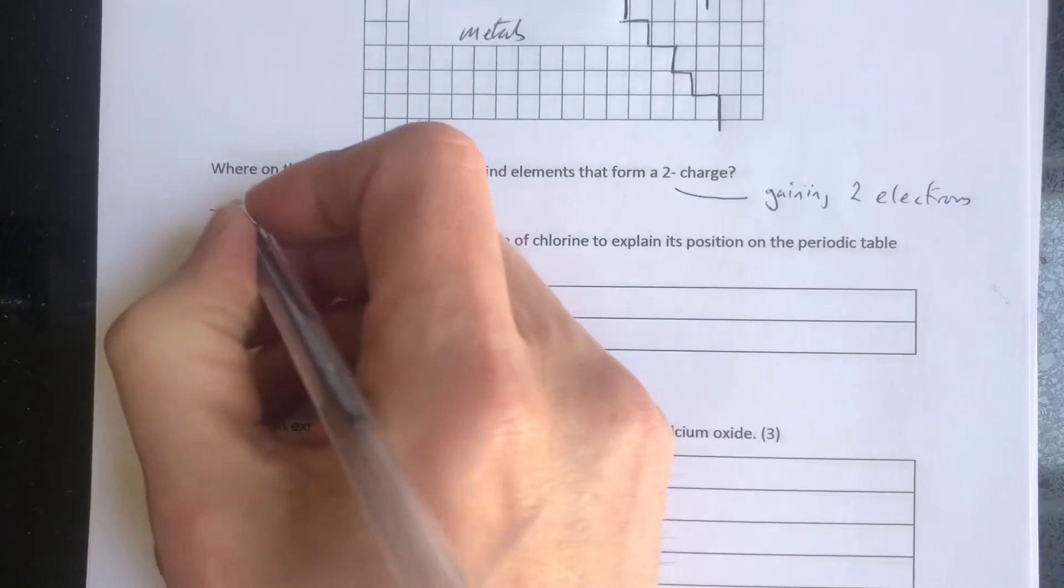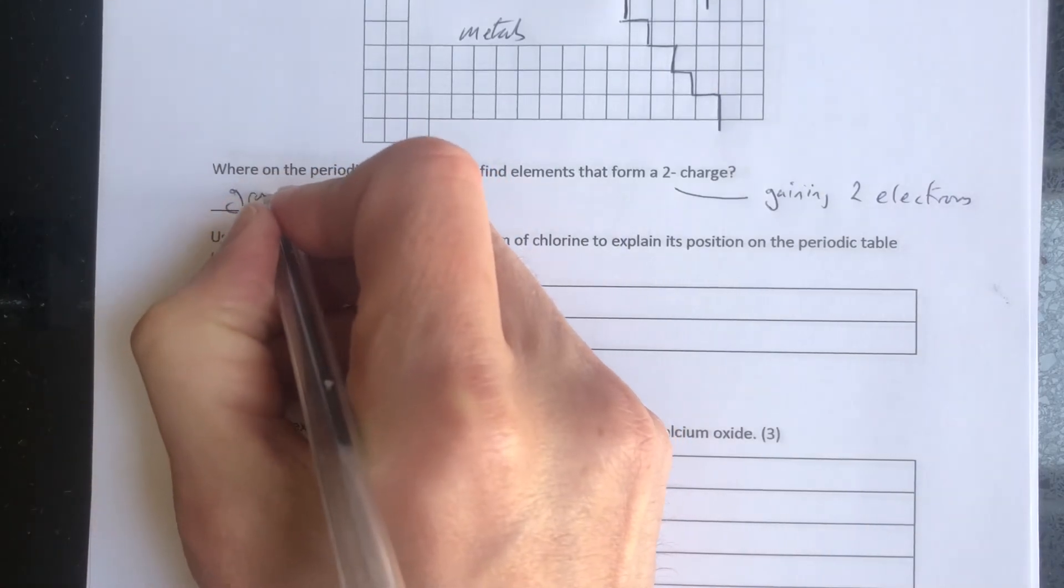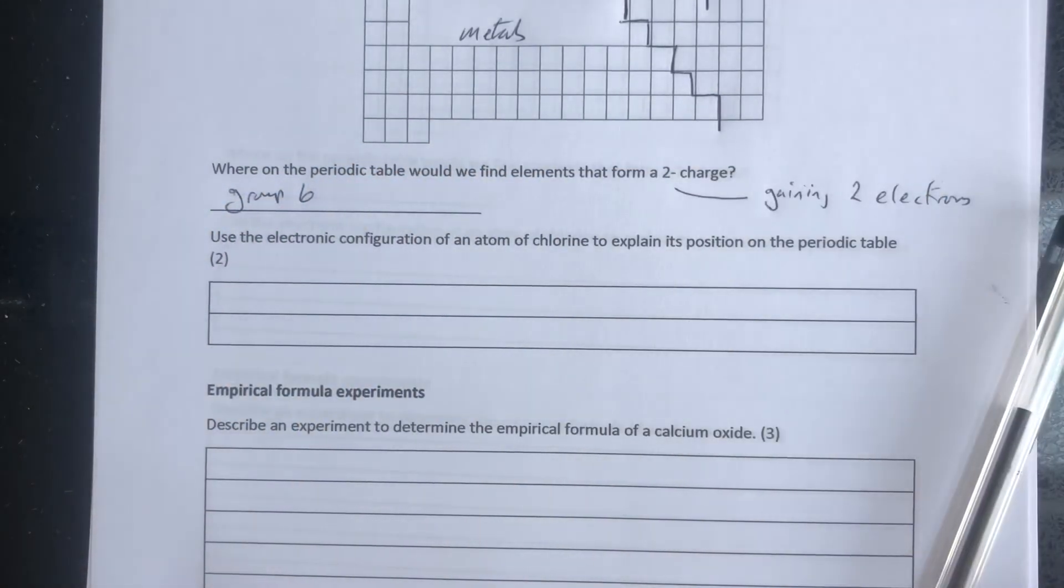So where on the periodic table would we find elements that are two-minus charge? The answer is group six, because they all have six electrons on their outer shell.